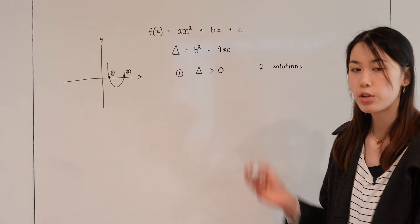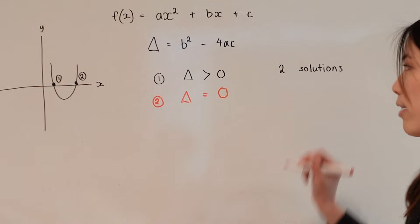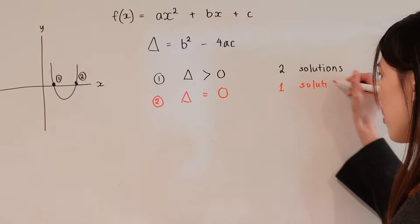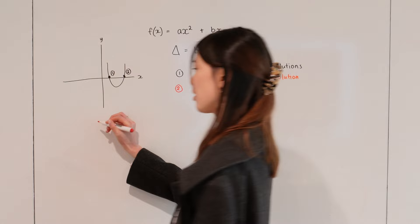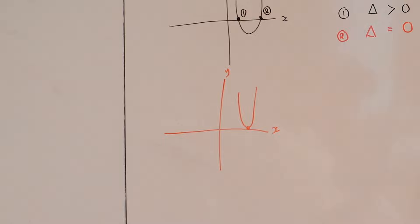If your discriminant is equal to zero, this means that your parabola will have one solution. That means that your parabola will touch the x-axis one time.